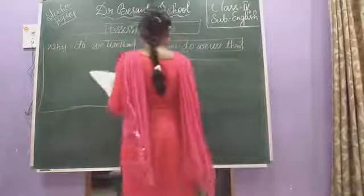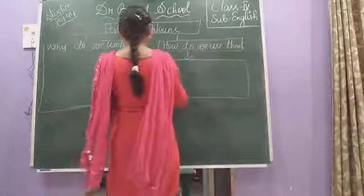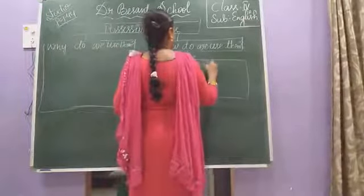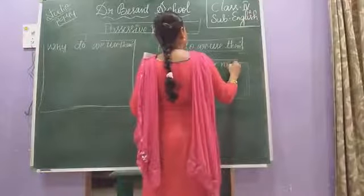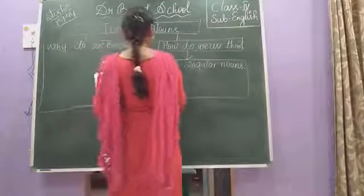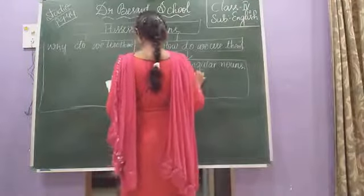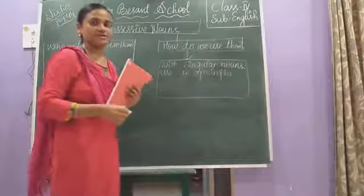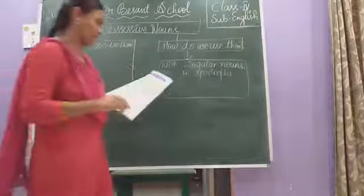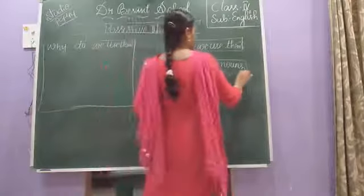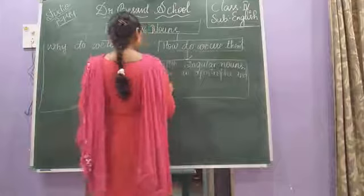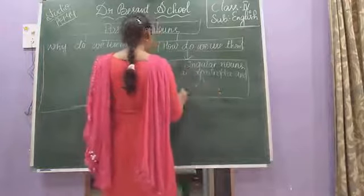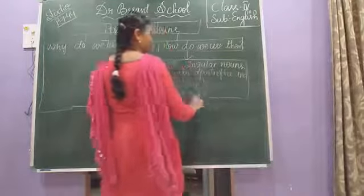Here they gave you an example. With singular nouns, use an apostrophe. When it is singular, you will put that apostrophe between the noun and the S — before S we have to give it, then S. For example, sister is one, then apostrophe S. Usha — singular noun — like this.